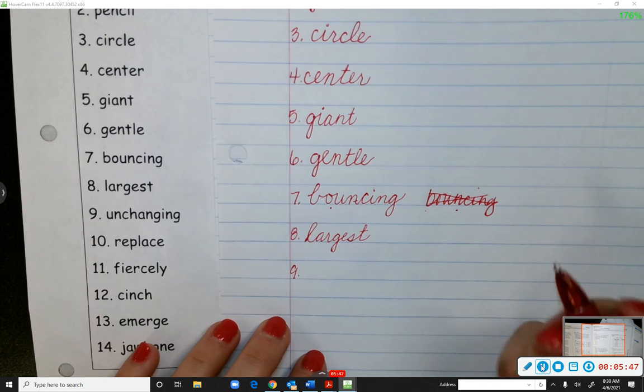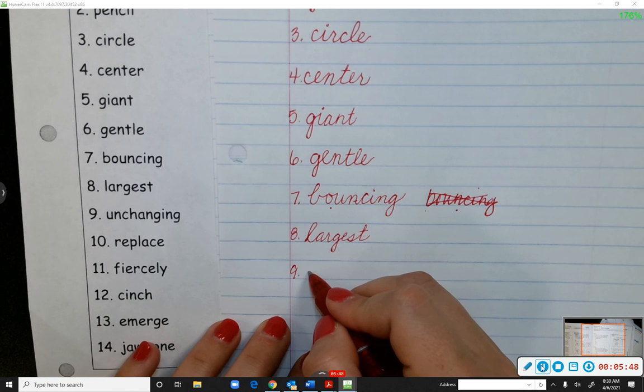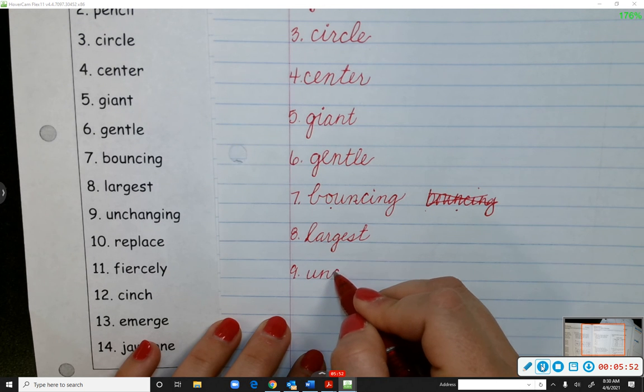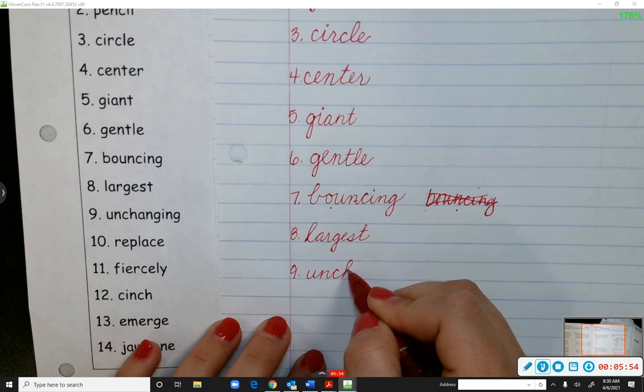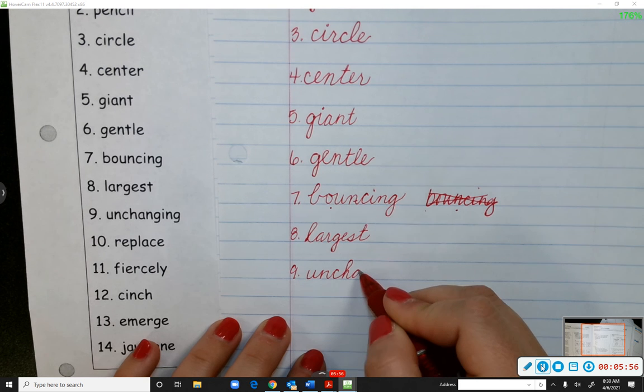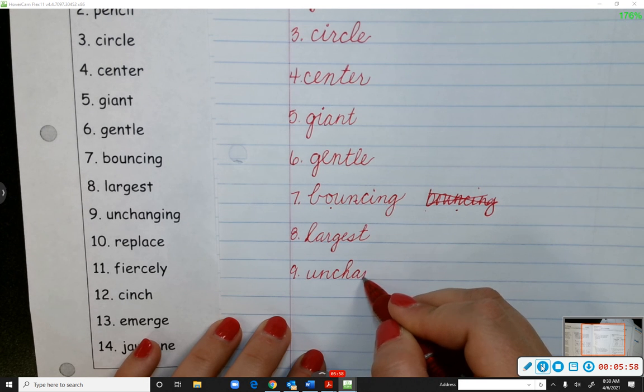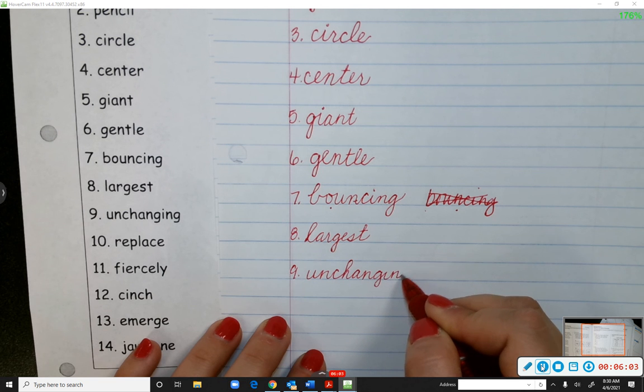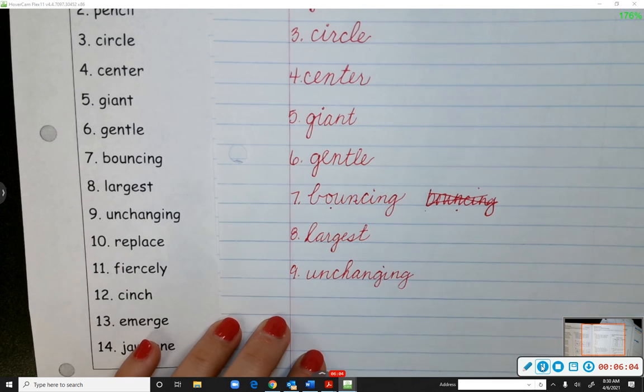Number nine, unchanging. So U, N, C, H, A, N, G, I, N, G. Okay?